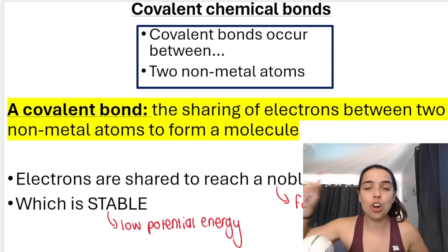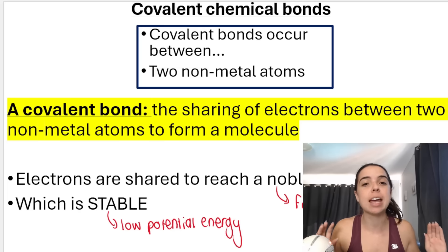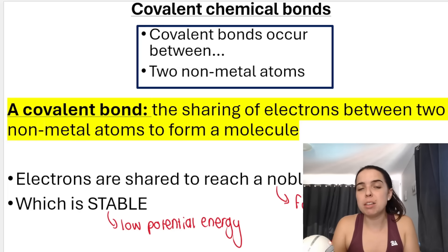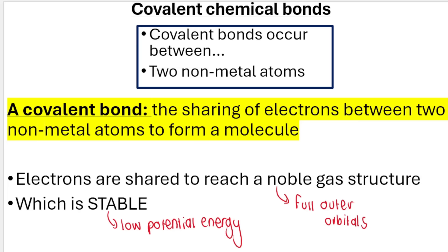Covalent bonds occur between two non-metal atoms. If you're asked to define a covalent bond, you can't just say it's something that happens between two non-metal atoms. The official proper definition is: a covalent bond is the sharing of electrons between two non-metal atoms to form a molecule. You need to say 'sharing,' 'of electrons,' 'between two non-metal atoms,' and 'forms a molecule.' All these words are very important in the definition.